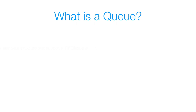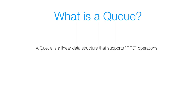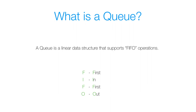So what is a queue? A queue is simply a linear data structure that supports FIFO operations. Linear means that items can be added sequentially to the queue and removed sequentially from the queue. FIFO stands for First In First Out, which means the first element we add to our queue is the first element we remove from our queue.